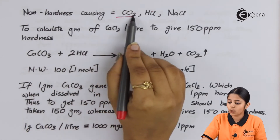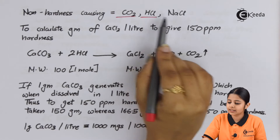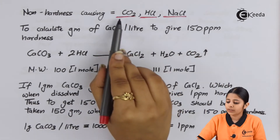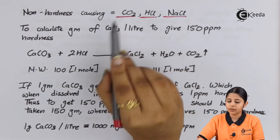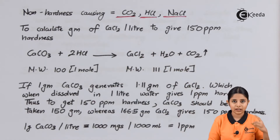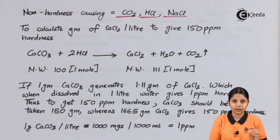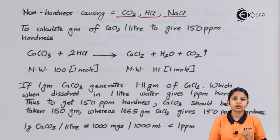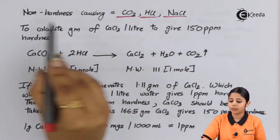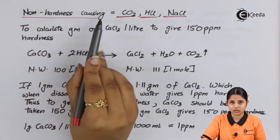Finally, we have CO₂, HCl, and NaCl. None of these are carbonates or bicarbonates, so they do not cause temporary hardness. None are sulfates or chlorides of calcium or magnesium, so they do not cause permanent hardness. That is why CO₂, HCl, and NaCl are classified as non-hardness causing agents.